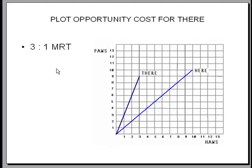Now I'm going to add the three to one opportunity cost curve for over there. As you can see when I produce three paws over there I give up one haw.